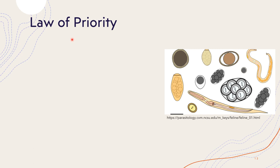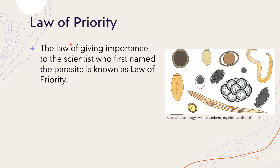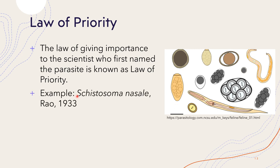The law giving importance to the scientist who first named the parasite is known as the law of priority. If the genus and species names are named after a scientist, the name of the scientist and the year should follow the scientific name. For example, Schistosoma nasale, Rao, 1933.